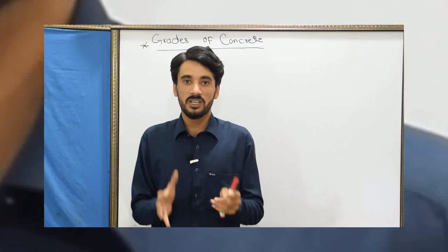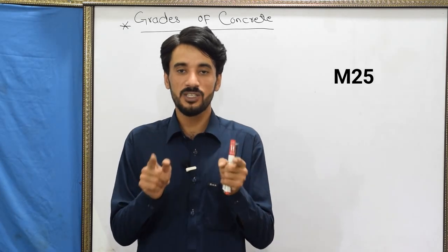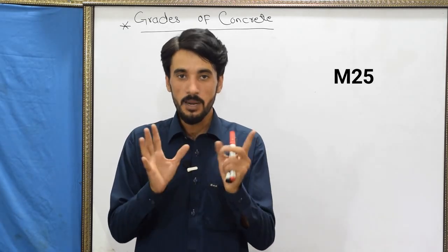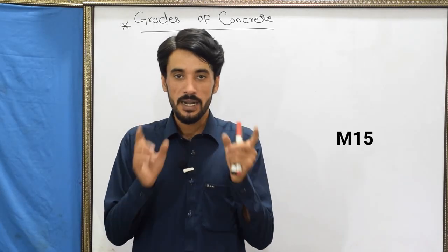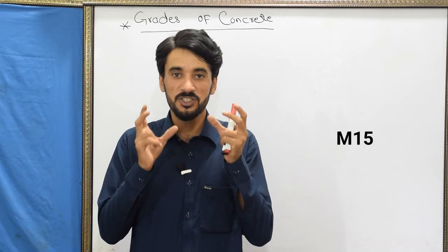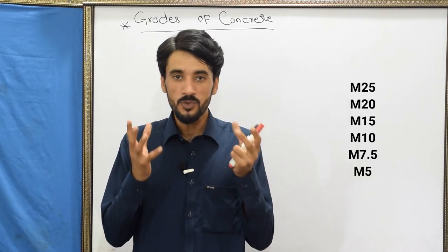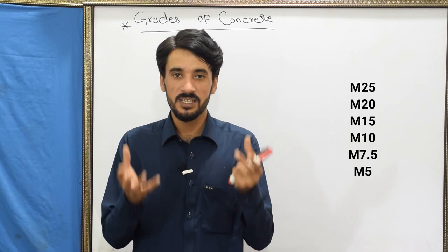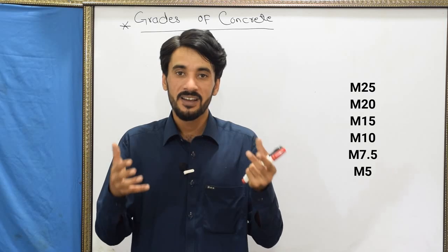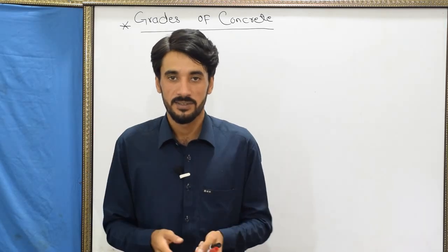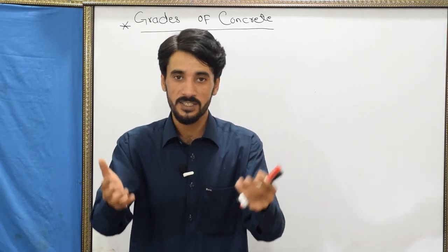As an engineer, you have to mention M25 concrete for RCC work and slab, M20 concrete for roof slab, and M15 concrete for PCC work. So what do M25, M20, M15, M10, M7.5, and M5 really represent? These represent the grades of concrete.